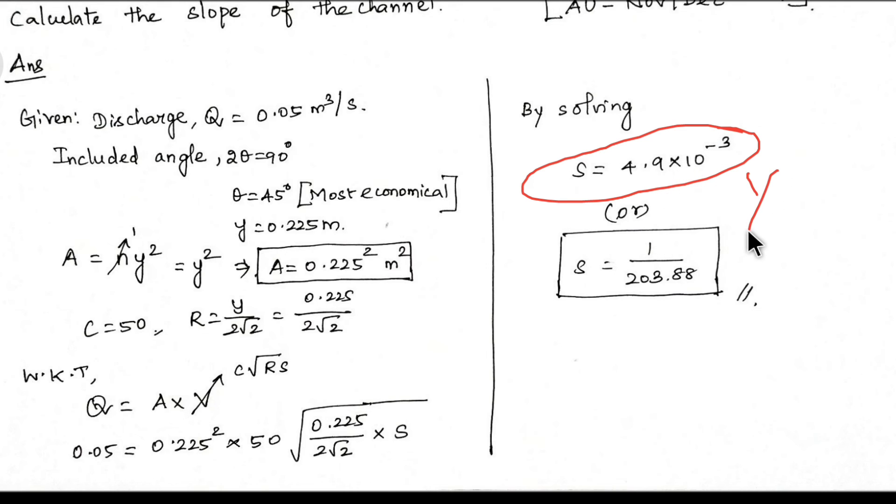1 divided by S₀. So the answer is 1 divided by 203.88. In the triangular section, the question will be solved.